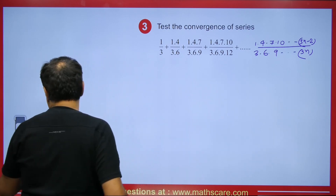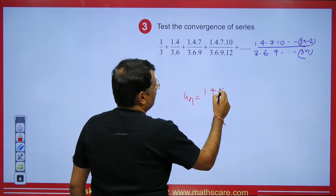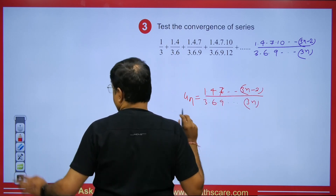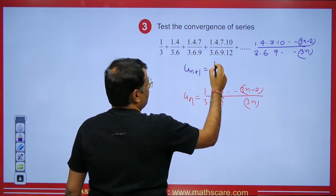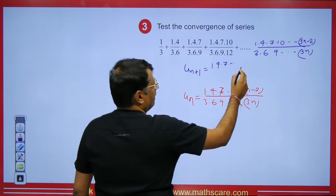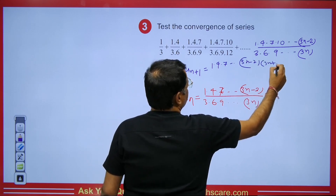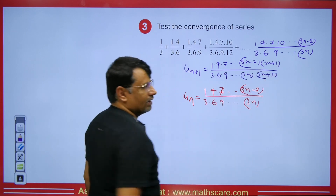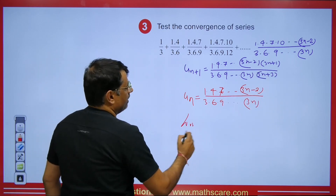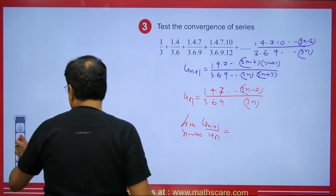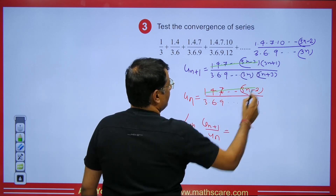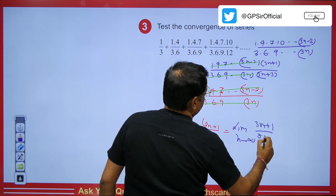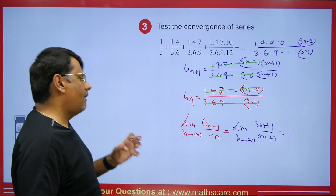So u_n = (1·4·7···(3n−2)) / (3·6·9···(3n)). For u_{n+1}, replacing n with n+1: the numerator gains factor 3n+1 and the denominator gains 3n+3. Applying D'Alembert Ratio Test — limit as n tends to infinity of u_{n+1}/u_n — after cancellation we are left with (3n+1)/(3n+3), whose limit as n → ∞ equals 1. So D'Alembert fails.